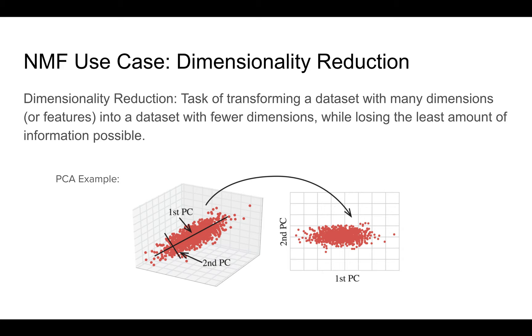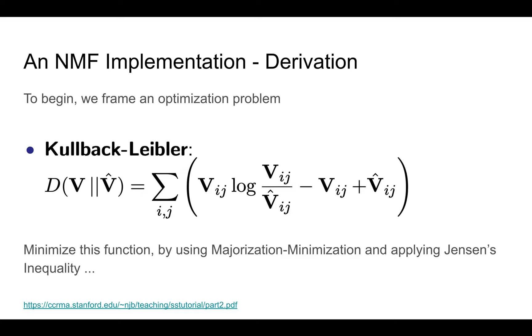Now let's actually see how NMF can be implemented. So to begin this, we frame it as an optimization problem. What is the distance between our approximate matrix V or V hat? You could also say that's W matrix multiplied with H. What's the distance of that to our original matrix V? And a distance measure that works really well for us is called the Kullback-Leibler or KL divergence. And that's the formula right there in the middle.